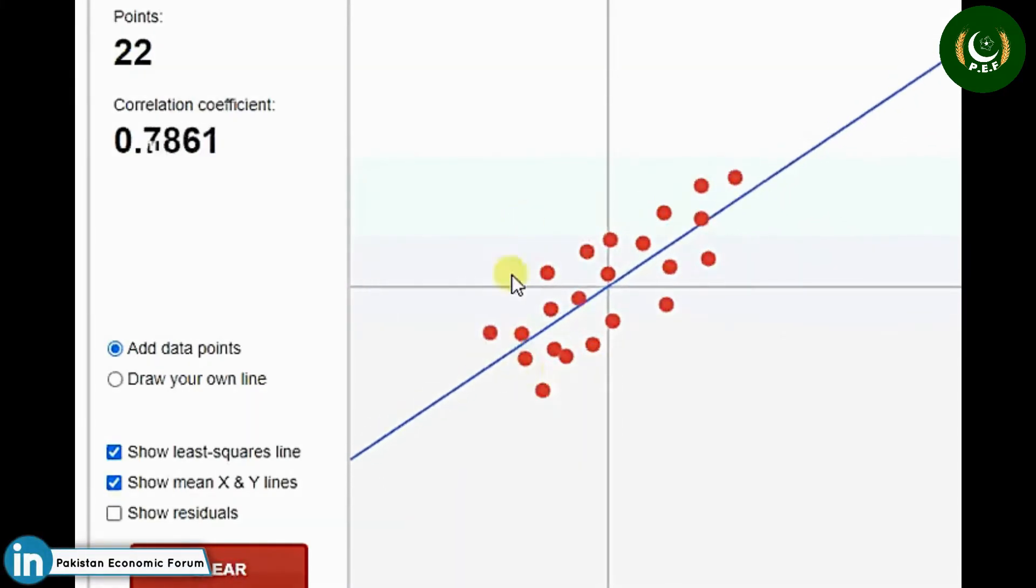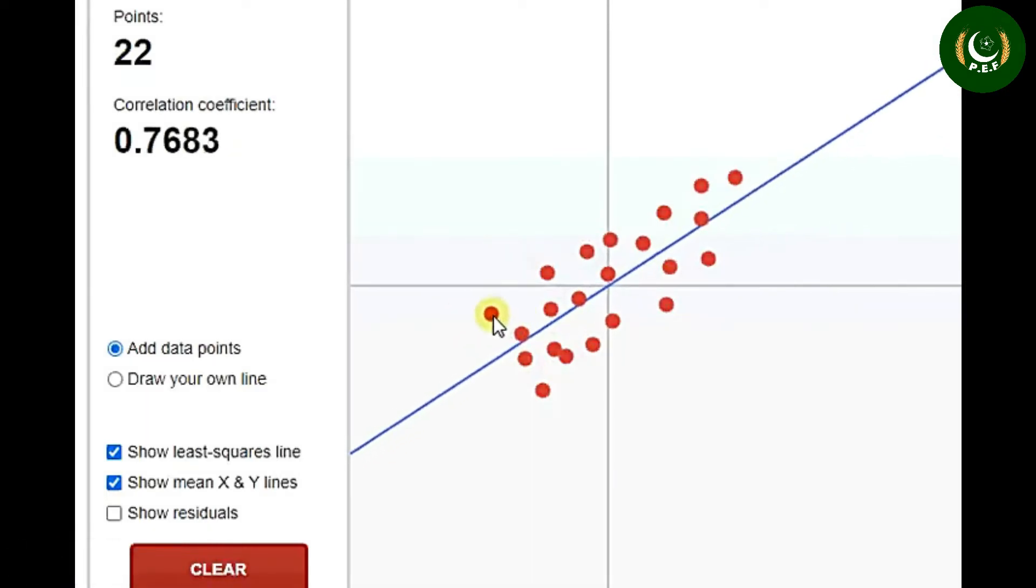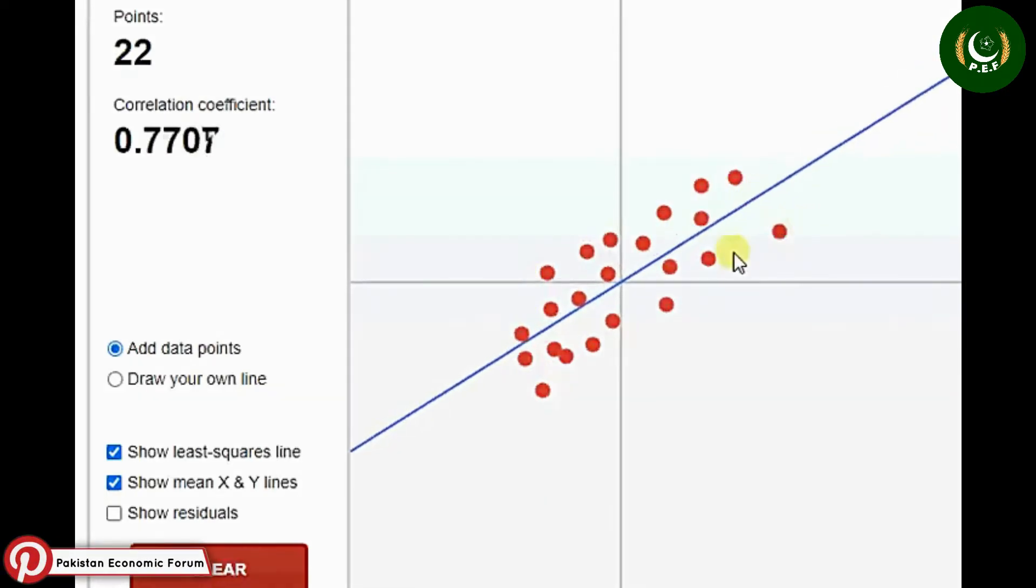That's how you see that outliers affect your least square line as well as your correlation. So please be careful and always make a plot before going for fitting.